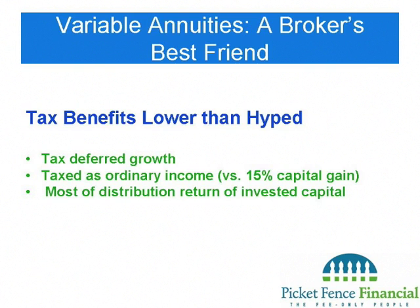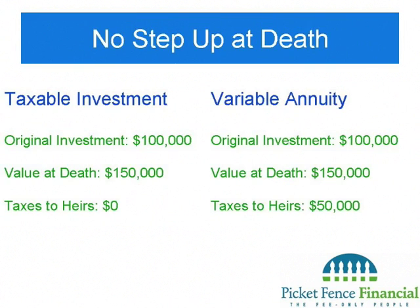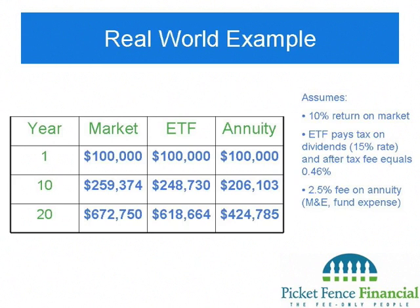Another disadvantage of a variable annuity is that you don't get a step-up in basis at death. If you own an asset outright — say you put in $100,000 and it was worth $150,000 when you died — your heirs would inherit it at $150,000 and only pay tax if the value went above that. But with a variable annuity, if you put in $100,000 and it's worth $150,000 at death, your heirs still pay tax on that $50,000 gain. It creates a real tax disincentive for leaving money to family.